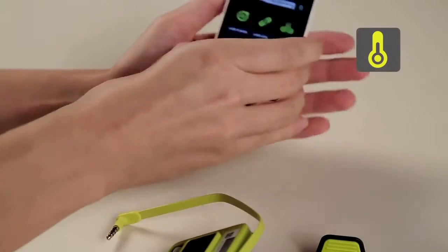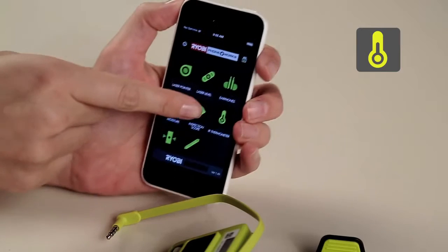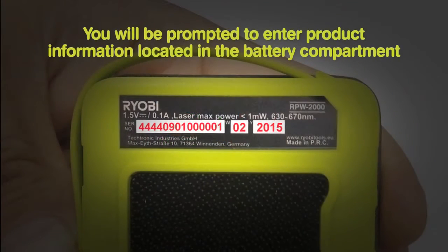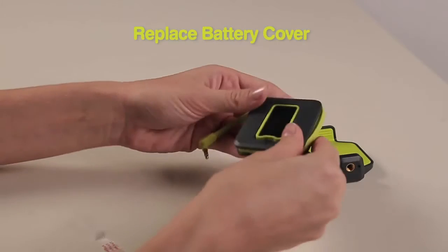Select the infrared thermometer icon to launch this segment of the app. From there, select Activate. You'll be prompted to enter the product information located in the battery compartment. Then replace the battery cover.